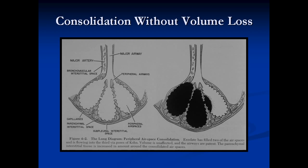On the right side is a diagram of what happens when you have airspace disease. All of those air spaces fill up with some kind of fluid — whether it's pus, hemorrhage, or edema — and you'll notice there is no volume loss. However, this area of consolidation is soft tissue density, meaning the interfaces that formed in your lung between air and soft tissue will no longer be visible where there is consolidation.